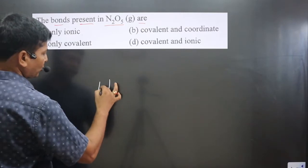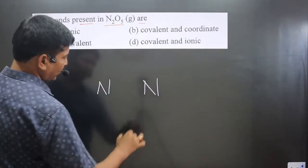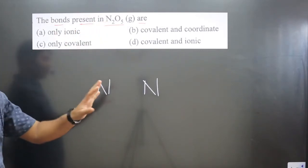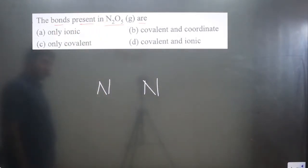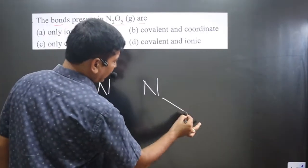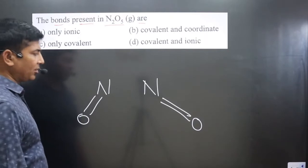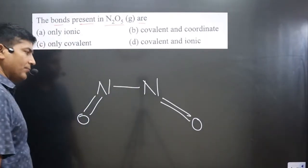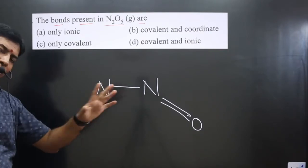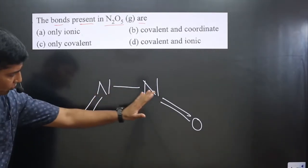N2O5 has two nitrogen atoms, so we can have nitrogen-nitrogen linkage. Now we can distribute these oxygens to the two nitrogens. I attach one oxygen here with a double bond, attach another oxygen here with double bond, and we attach nitrogen to nitrogen with a single bond.